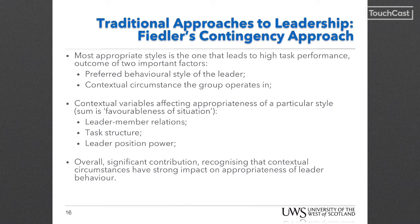Leader-member relations refers to the quality of the relationship between leader and followers. If good, both leader and followers have confidence, liking, trust, and respect for each other — a favourable situation for the leader, as it makes it easier to influence subordinate behaviour. Task structure refers to the nature of the group's tasks. If clear, unambiguous, and routine, there is less need for the leader to guide, direct, and supervise the group's work. Leader positional power refers to the formal organisational authority. If position power is high, the leader has authority to assign tasks to subordinates directly and to reward or punish for their performance.